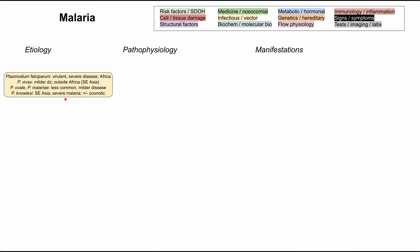The etiology of malaria revolves around a parasite in the Plasmodium genus. There are several species within Plasmodium. Plasmodium falciparum is the classic cause of malaria — it causes more virulent and severe disease compared to the others, and is most commonly found in Africa.